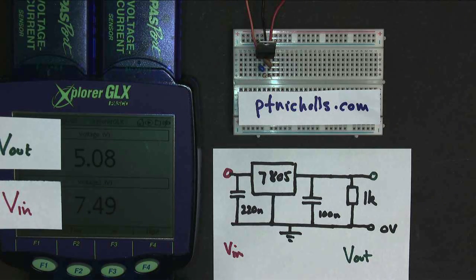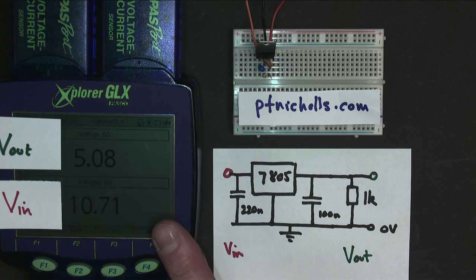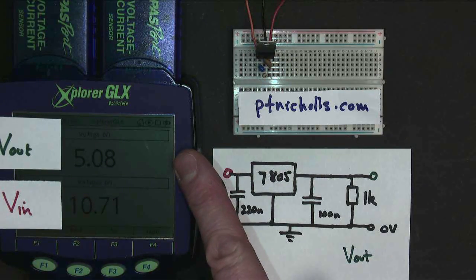And if I keep the input voltage going up, the output voltage no longer rises. So as long as the input voltage is more than about 1.5 volts above 5 volts, then the output voltage will stay fixed at 5 volts. A 5 volt regulator.